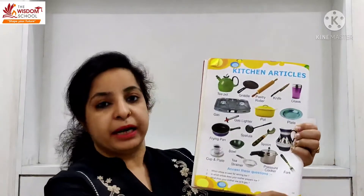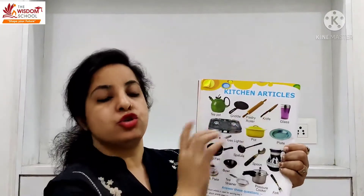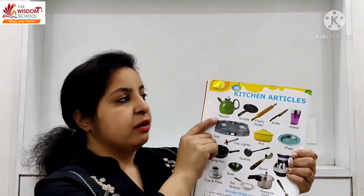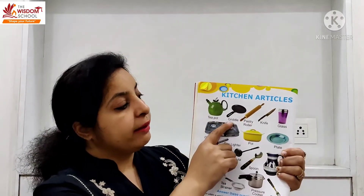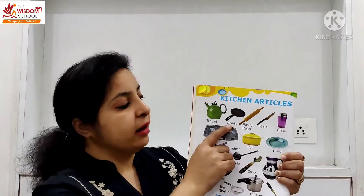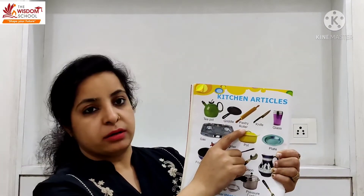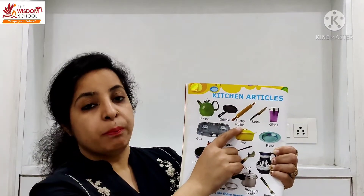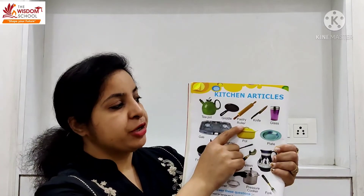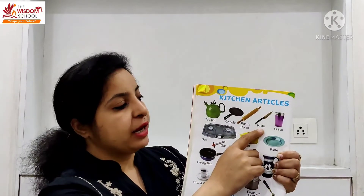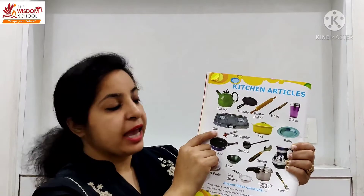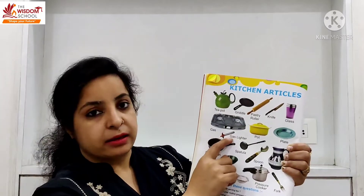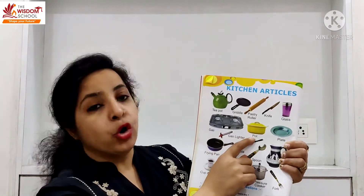First topic is page number 18, kitchen articles — jo cheezein kitchen mein hoti hain. First is tea pot, griddle (tawa jis ko bolte hain), pastry roller (jis ko belan bolte hain), knife, glass, gas, gas lighter.